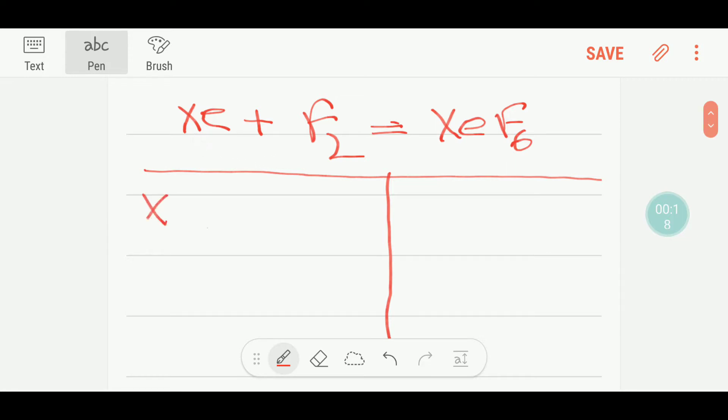On the left hand side or reactant side, we have one xenon atom and we have two fluorine atoms. And on the right hand side or product side, we have one xenon atom and we have six fluorine atoms.